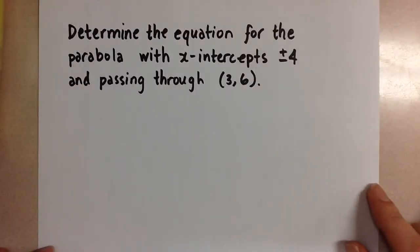We are going to find the equation for the parabola with the x-intercepts positive, negative 4, and passing through the point 3, 6.